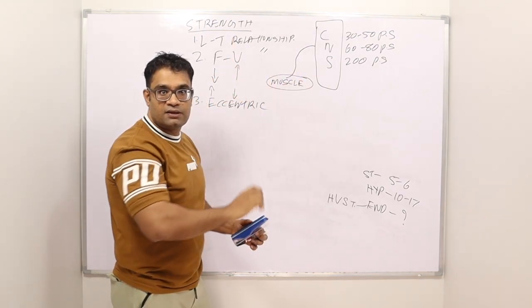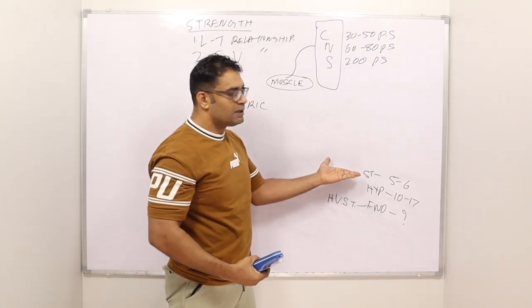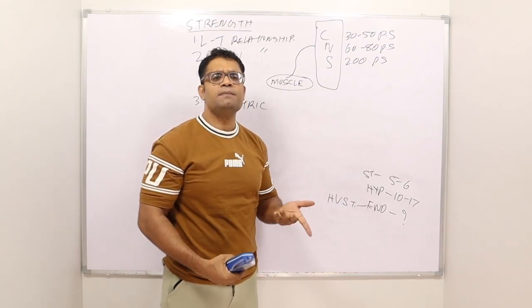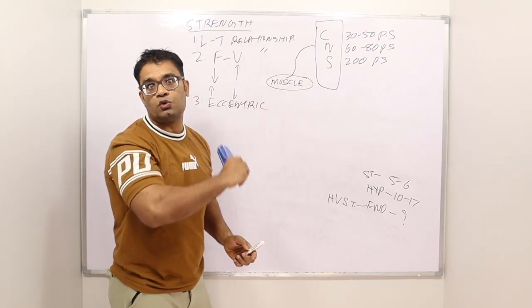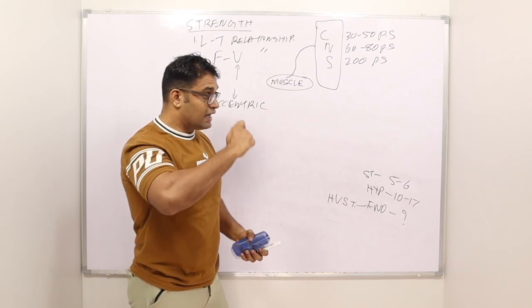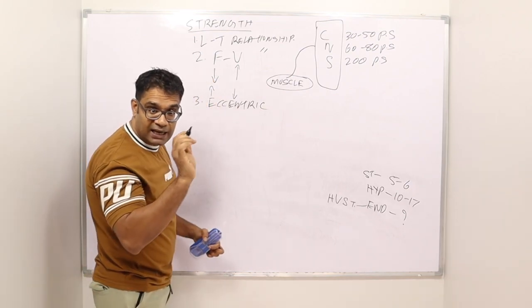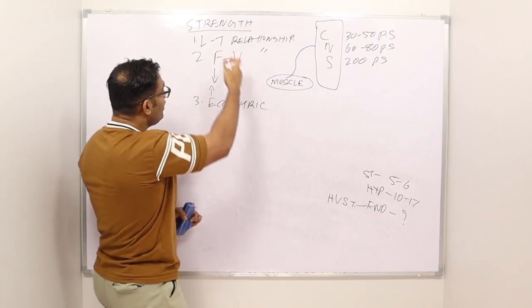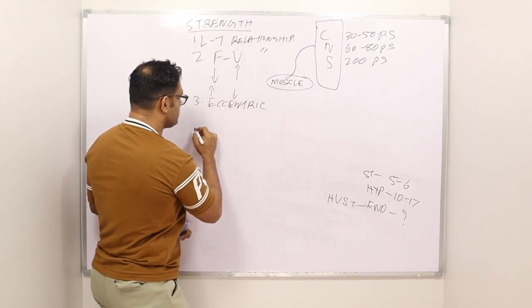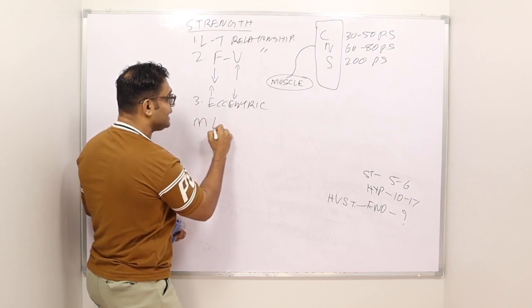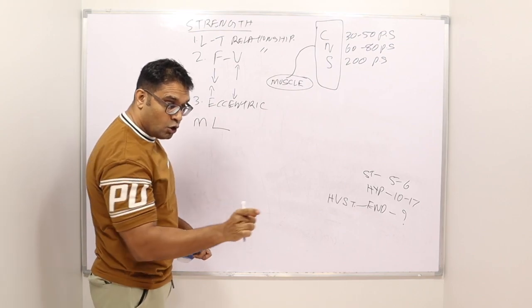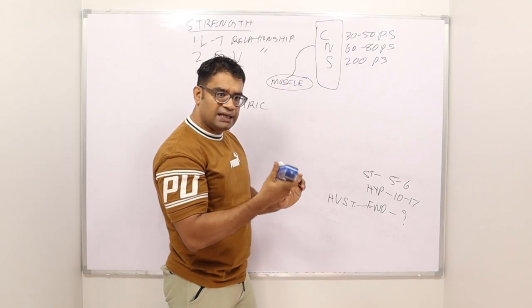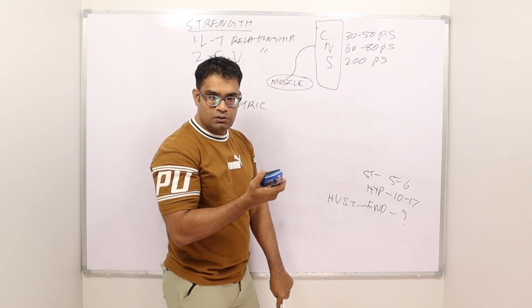Because I am going so fast, and the time is not there to do the actin-myosin cross filamentation, this rate coding goes up to 60 to 80 times per second. This is a very average number. Because this in well-trained athletes can shoot up to 200 times per second in the beginning of high-velocity strength training. Third principle: eccentric loading, eccentric lengthening, eccentric contractions. Eccentric means this. Theory says that this can be 130% more than this.